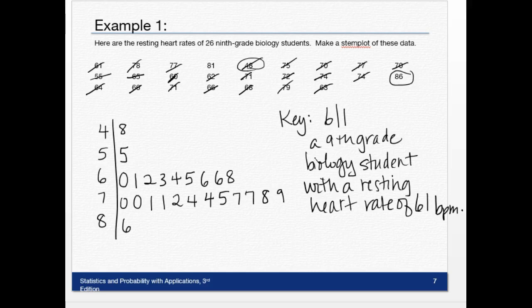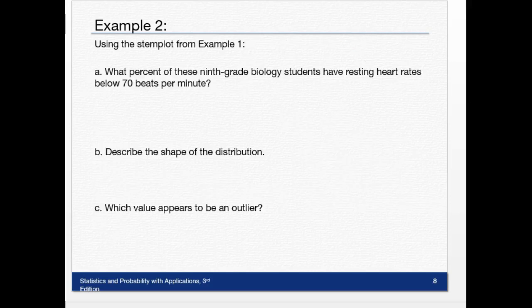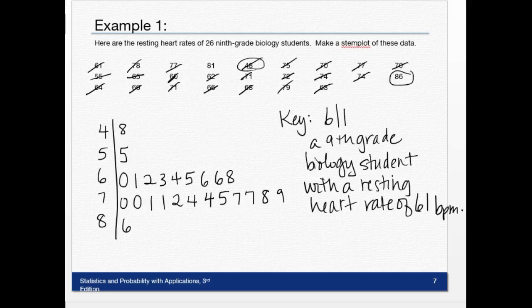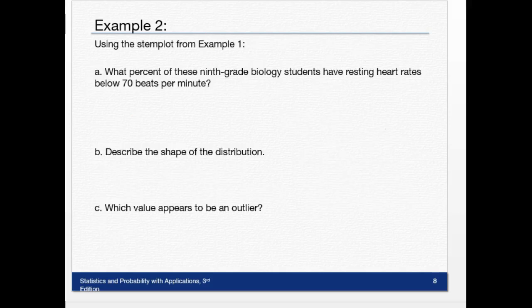Using the stem plot, we're going to answer some questions. What percent of these ninth-grade biology students have resting heart rates below 70 beats per minute? Remember, there's 26 total. How many are below 70? I need to look at my stem plot—this is 70 right here. Below 70 are: one, two, three, four, five, six, seven, eight, nine, ten, eleven out of 26. So 11 out of 26 gives me 0.423, which is 42.3 percent.